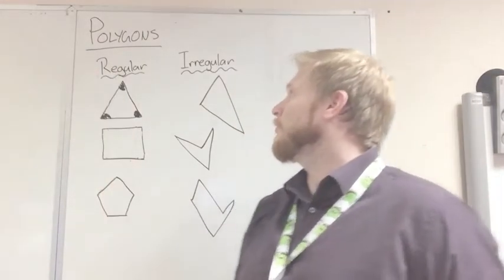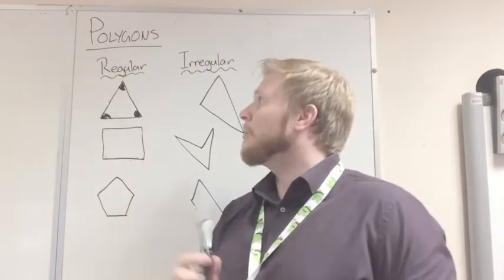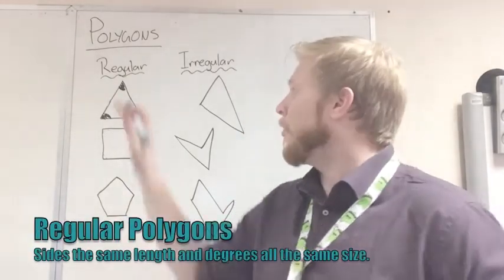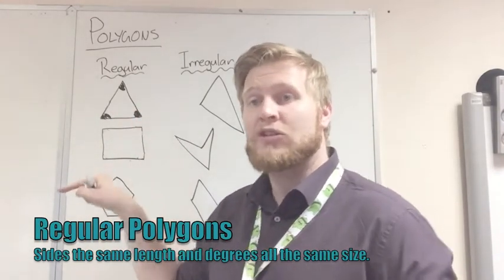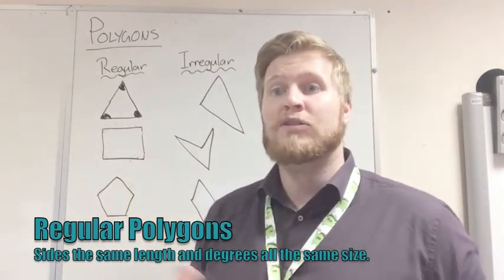Now, first we're going to look at regular polygons. Regular polygons are called that because they have all the sides the same length, and all the interior angles, so the angles on the inside of the shape, are the same size as well.